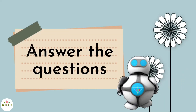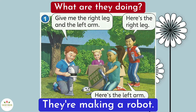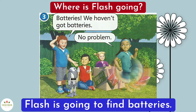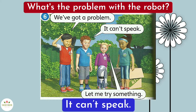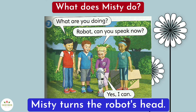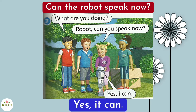Answer the questions. What are they doing? They're making a robot. Where is Flash going? Flash is going to find batteries. What's the problem with the robot? It can't speak. What does Misty do? Misty turns the robot's head. Can the robot speak now? Yes, it can.